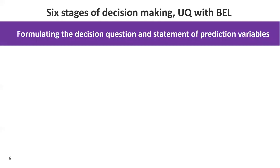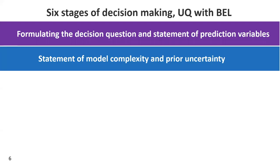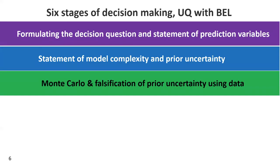The next step — the Bayesian step — is to look at this question and start thinking about what kinds of models we need to build. What is our model complexity and what are the initial or prior uncertainties? Here we don't need to be very accurate. The whole point is not to be accurate — it's to be broad and have a large range of uncertainties already present. What will come later is that we'll reduce these uncertainties with data.